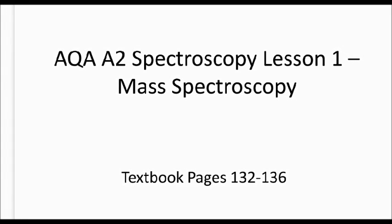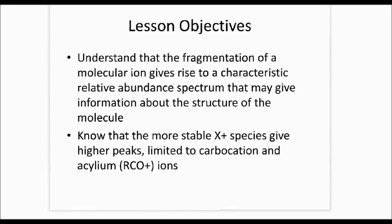Welcome to the first lesson for AQA A2 spectroscopy, which is Unit 11. The first lesson is on mass spectroscopy. If you have your official textbook, you can look at pages 132 to 136 to help. Our lesson objectives are: first, to understand that the fragmentation of a molecular ion gives rise to a characteristic relative abundance spectrum that may give information about the structure of the molecule; and second, to know that the more stable X-plus species give higher peaks. This is limited to carbocations and acylium ions, which are carbonyl ions.